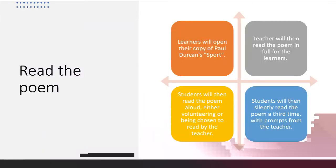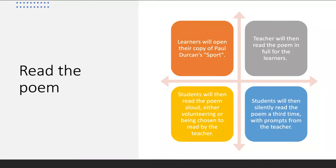Learners will then read the poem. They will be expected to have their copy of Sport by Durkan. The teacher will first read the poem aloud for the learners, then students will read the poem aloud as a class by either volunteering or being prompted by the teacher. They will then read the poem a third time silently, being directed by the teacher to ensure purposeful reading.